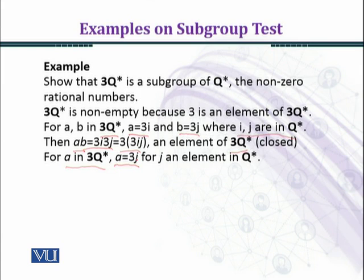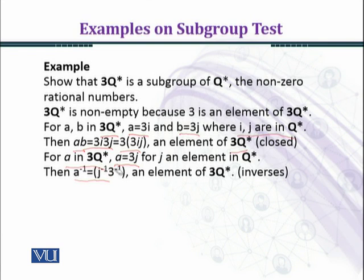Now you can see that a^(-1) = (3j)^(-1) = 3(j^(-1)), and this can be written as 3·(1/j), which is in the form of the elements of 3Q*. So we have seen that existence of inverses for the elements of 3Q* is in 3Q*.